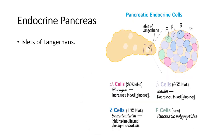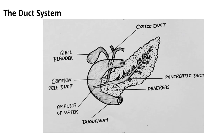After writing about exocrine pancreas, write about the endocrine pancreas. The endocrine pancreas consists of the islets of Langerhans, which contain alpha, beta, theta, and F cells. Alpha cells secrete glucagon, beta cells secrete insulin, theta cells secrete somatostatin, and F cells secrete pancreatic polypeptides. Next, draw the duct system: the pancreatic duct is formed by different interlobular ducts, joins with the common bile duct, and forms the ampulla of Vater, opening into the duodenum at the duodenal papilla.